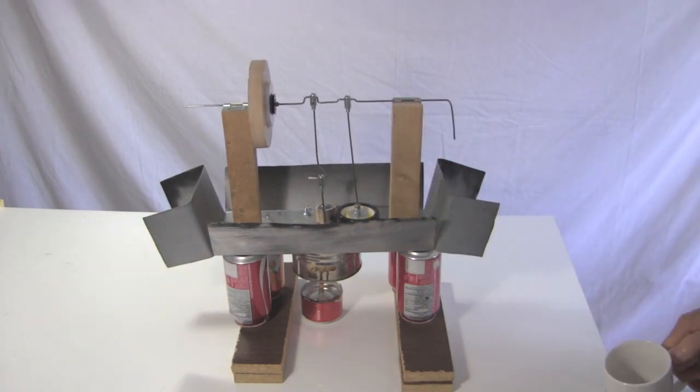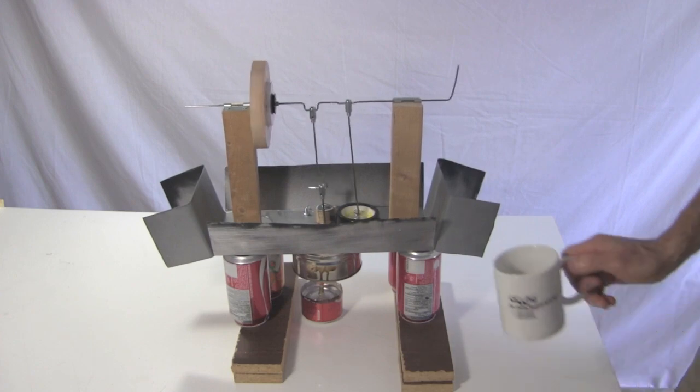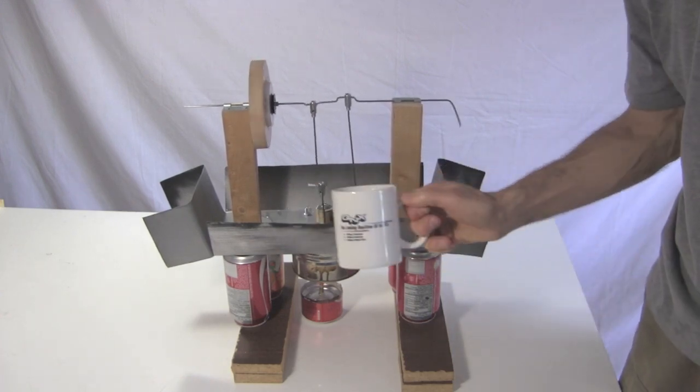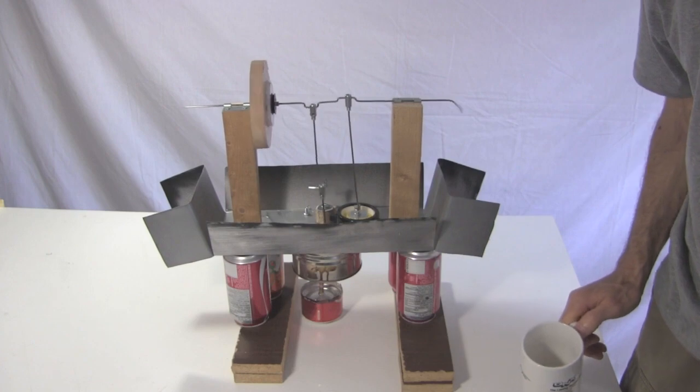But then I decided to pour some water over the top plate. That's to help with the cooling when the displacer moves the air in the cylinder to just under the top plate. As you can see, there was a big speed increase.